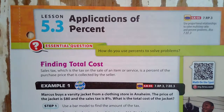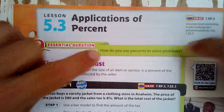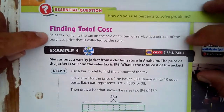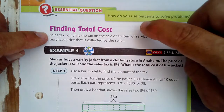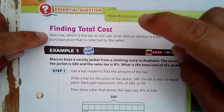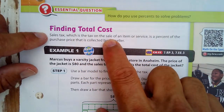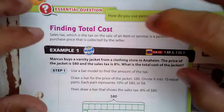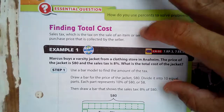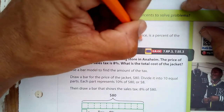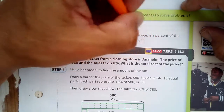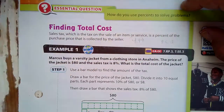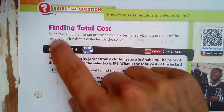Lesson 5.3: Applications of Percent — how do you use percents to solve problems? We're going to start with finding the total cost using sales tax, which is the tax on the sale of an item or service — it's a percent of the purchase price collected by the seller. You might notice that when you buy something at Target for four dollars ninety-nine cents, you end up paying five dollars twelve cents or so at the register.